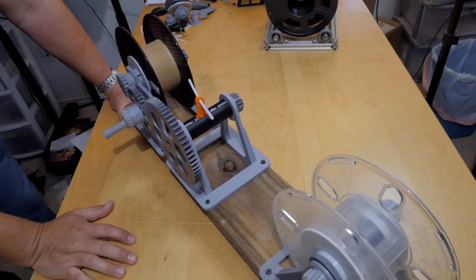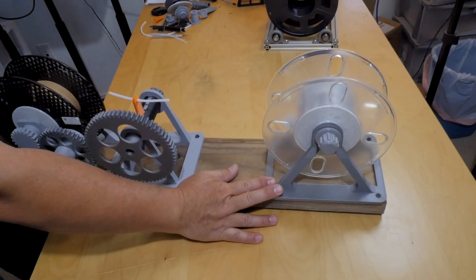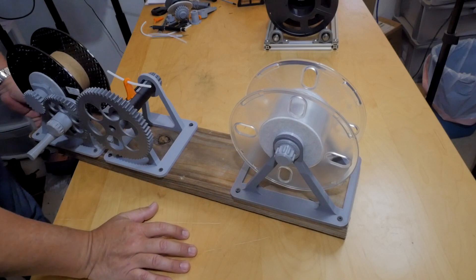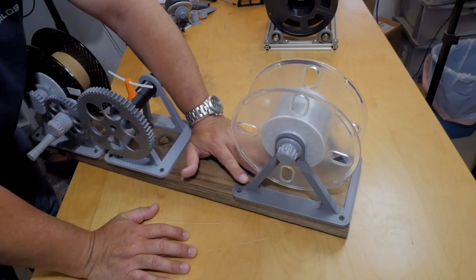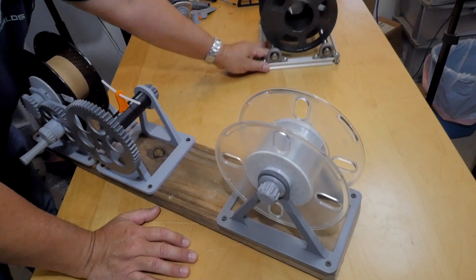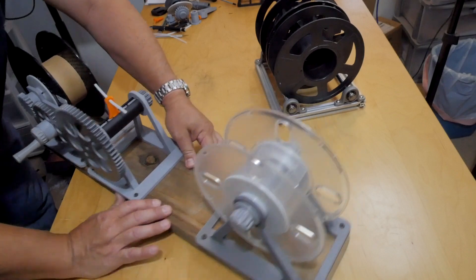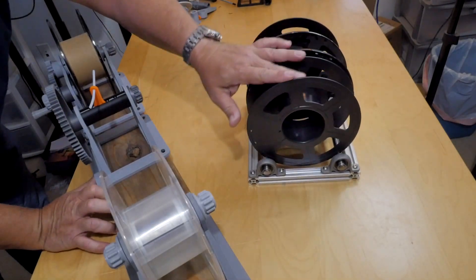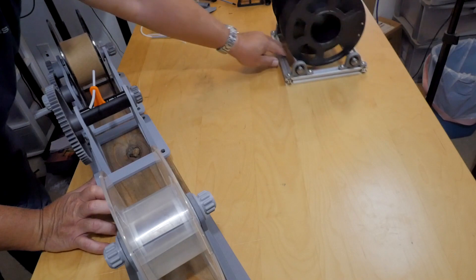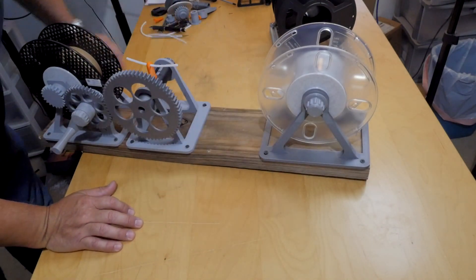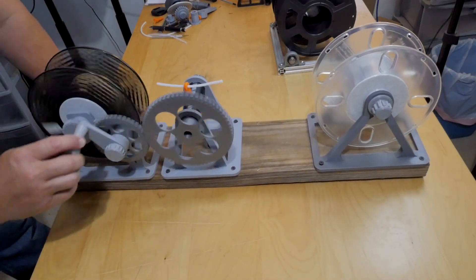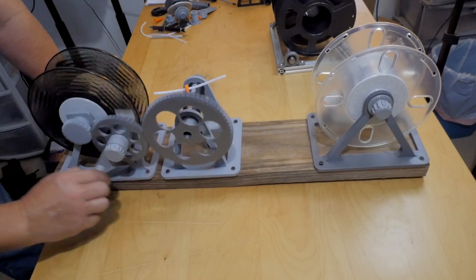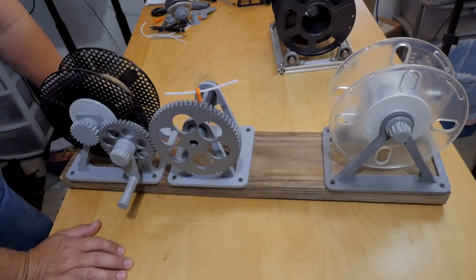This actually doesn't matter which way you go, but of course you want to be going this way to transfer the filament correctly. Over here on the front section, you can see this is the donor spool. You put this on and feed it through. You don't actually have to use this if you don't want to. If you already have something made, you can use that in place of this.